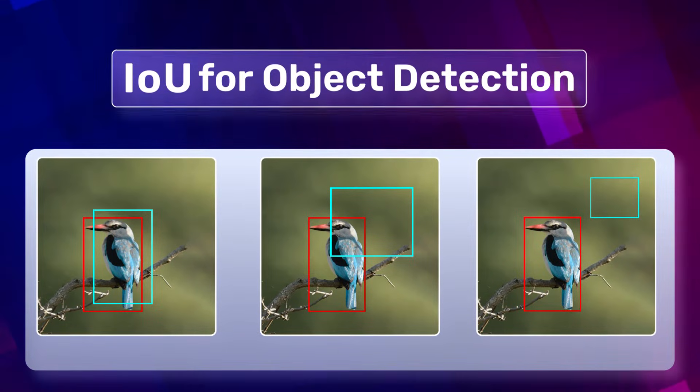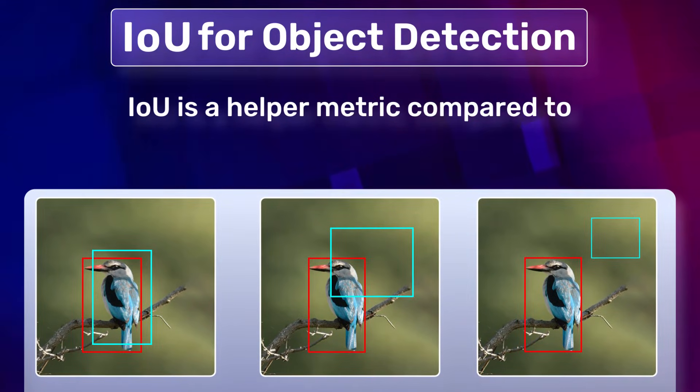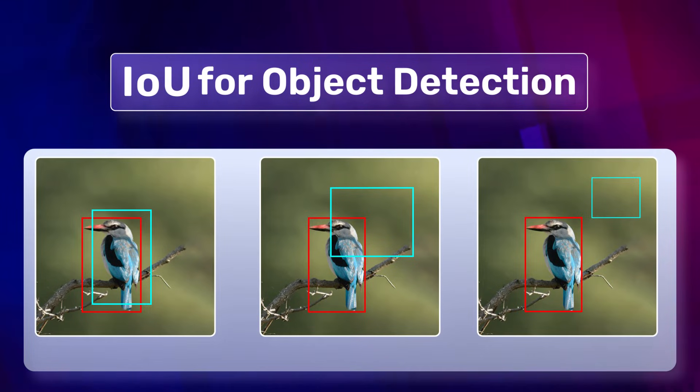In object detection, IoU is a helper metric when compared to other metrics such as recall, loss, or MAP. To understand this, let's look closely at three different predictions.